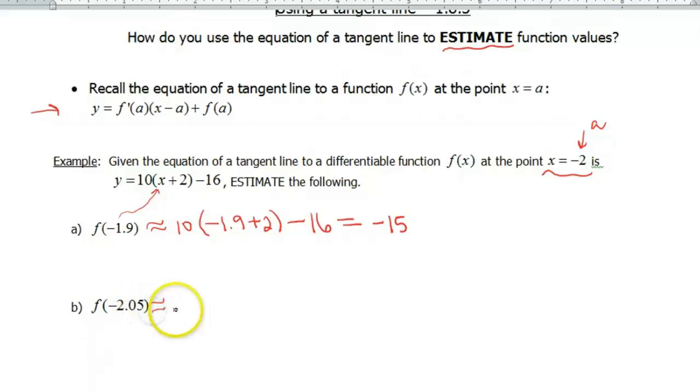All right, so what you're gonna do is, again, plug that value in. So we're gonna have 10(-2.05 + 2) - 16. And that's gonna give us a value of -16.5.